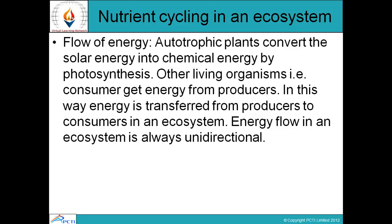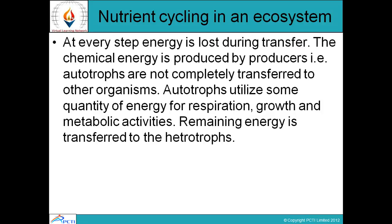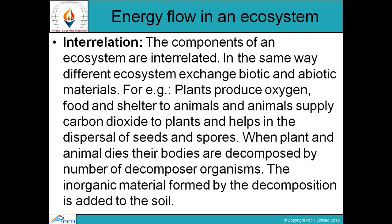Regarding energy flow: solar energy is converted to chemical energy during photosynthesis. Consumers get energy from producers — energy is always transferred unidirectionally from producers to consumers to decomposers. At every step there is energy loss. Maximum energy is with autotrophs; some energy is utilized by autotrophs for respiration, growth, and metabolic activities, and the remaining is transferred. Similarly heterotrophs use some and transfer the rest. Components of an ecosystem are interrelated, and different ecosystems exchange biotic and abiotic material.